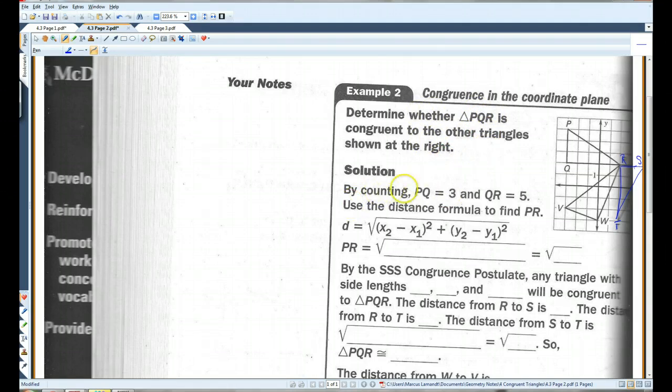Okay. By counting, PQ equals 3, QR equals 5. So, we just need to find this.